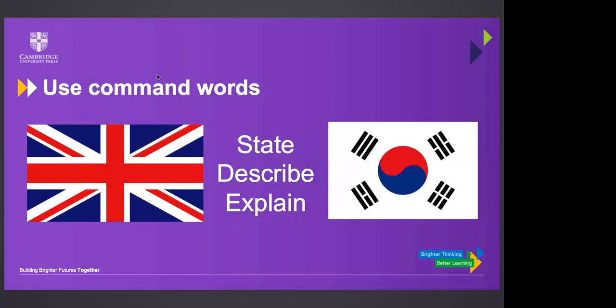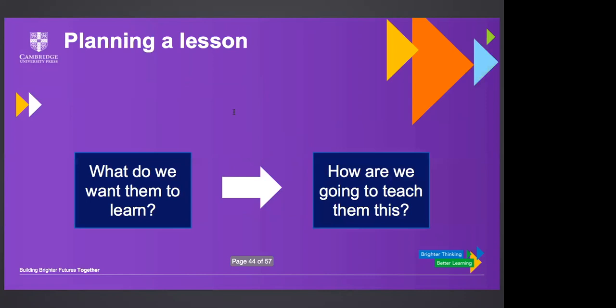There's an activity you can find online which encourages students to describe and explain objects or patterns that have nothing to do with the subject they're studying. Here we have two flags — encouraging students to describe and then explain the patterns really helps them understand the difference between describe and explain. So once you've identified what you want them to learn, you have to start thinking about how we're going to help them learn this.